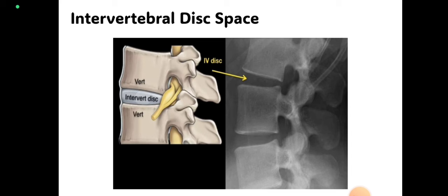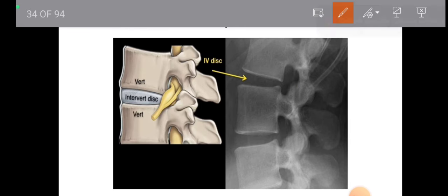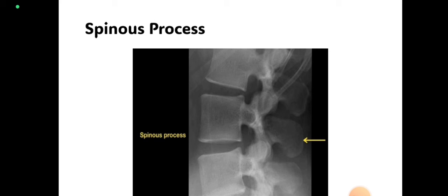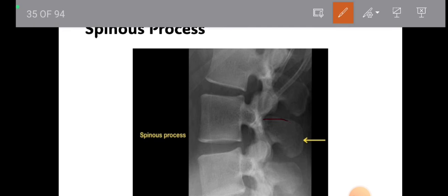Here is the line diagram of the lateral view x-ray. During interpretation of the lateral view, first you have to look for the intervertebral disc space, which is made up of the intervertebral disc. Since the intervertebral disc is soft tissue, it will not appear on the x-ray — it will appear as an empty space between two adjacent vertebrae.